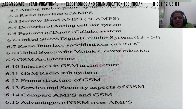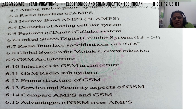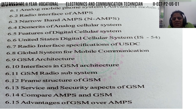The third topic is narrowband AMPS. If you have a band or frequency, you can use it. The fourth topic covers merits and demerits of the analog cellular system.